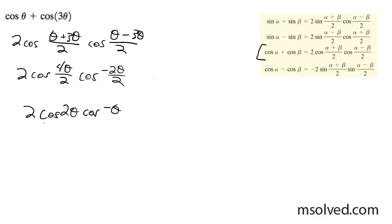But because cosine is an even function, you can just simply write this as 2 cosine 2 theta cosine theta. That's it.